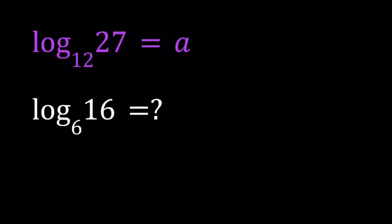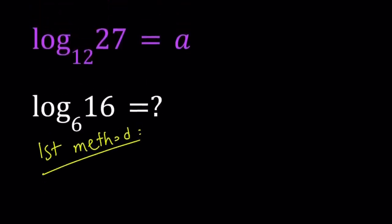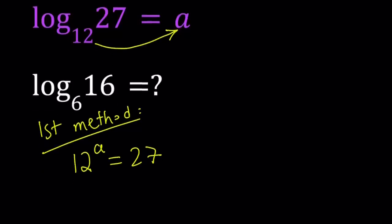I'll be presenting two methods. Let's start with the first one. For my first method I'm going to be using an exponential approach as opposed to a logarithmic approach. By using the definition of logs, we can write from the first equation 12^A equals 27. If you're not familiar with logs, that's basically what it means. We're writing an exponential equation in a different way.